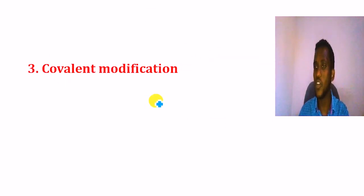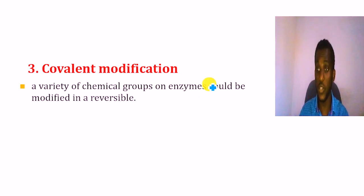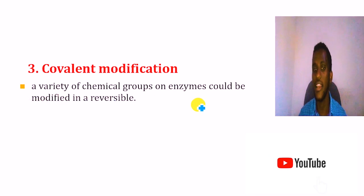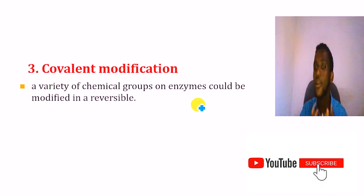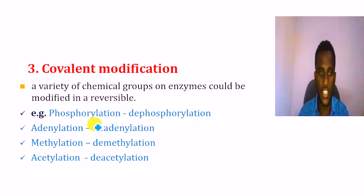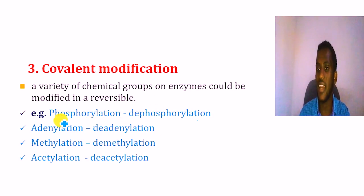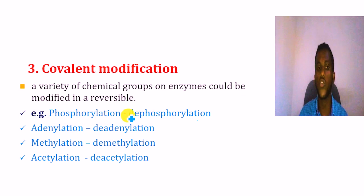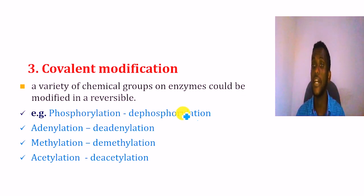Covalent modification: when a chemical group is added to or removed from an enzyme, this regulates enzyme activity. For example, phosphorylation is the addition of a phosphate group, and dephosphorylation is the removal of phosphate. Adding or removing phosphate regulates enzyme activity.